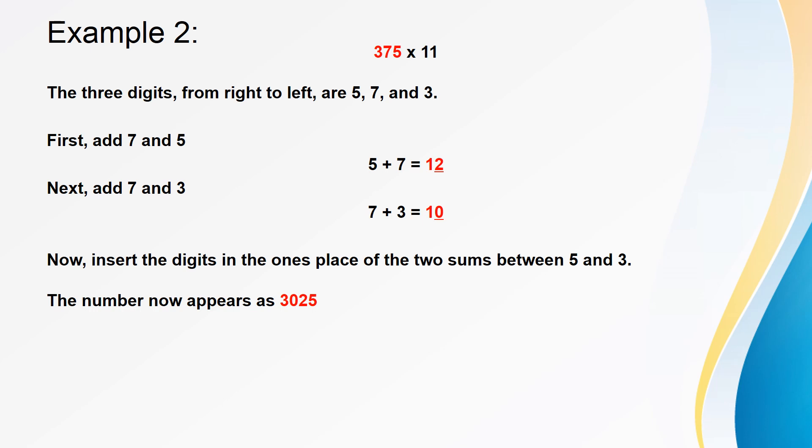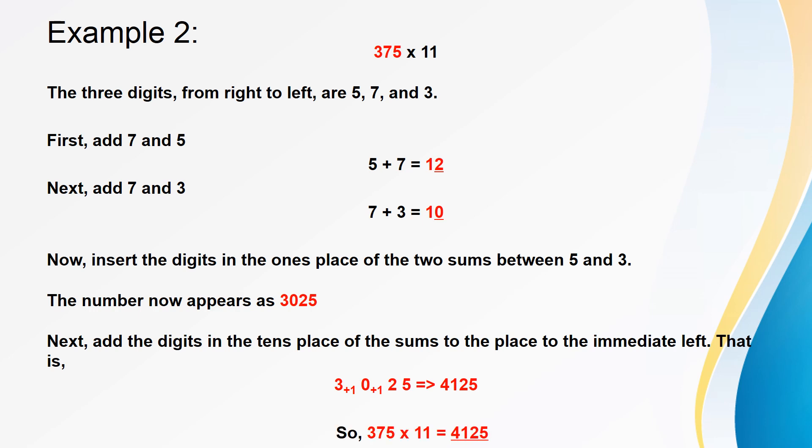The number will now appear as 3025. Then, add the digit 1 from 12 to 0 and the digit 1 from 10 to 3 in the number 3025. This gives the answer as 4125. So, finally, 375 into 11 is 4125.